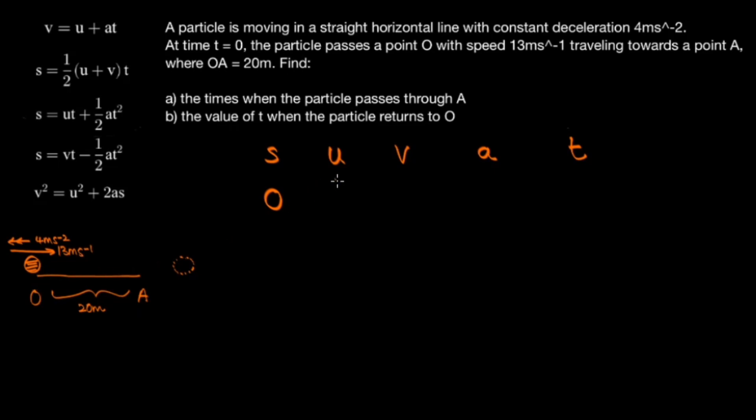The initial speed is 13 again. And the acceleration is also minus 4. And we're interested in finding the time. And we don't care about the letter V. And because we've got a cross below V again that means we're going to be using the same equation. S equals UT plus 1 half AT squared. And the letter that has changed is S.